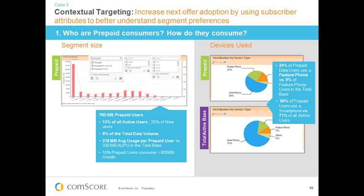Looking at the distribution of data use filtered to just those on a prepaid plan, we find the perhaps unsurprising fact that although 13% of our active users are prepaid users, they use only 8% of the total data volume across the entire network, with average data usage below the overall base average. More interestingly, there's a significant proportion — about 10% — that use a lot of data per month. So there's a section of the prepaid subscriber base that would be receptive to a postpaid offer if we can construct it to appeal to them.